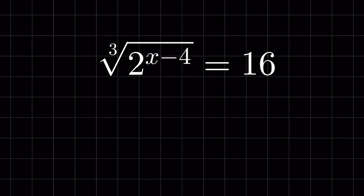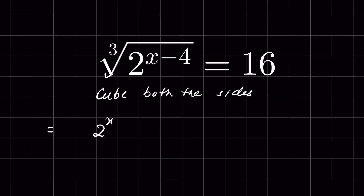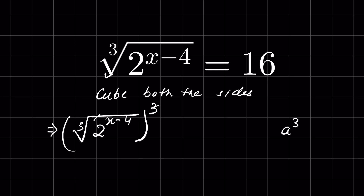2 raised to the power x minus 4, under cube root, is equal to 16. Find the value of x. To remove the cube root from the left hand side, we cube both sides. This allows us to remove the cube root, because cube root means raised to the power of 1 upon 3.